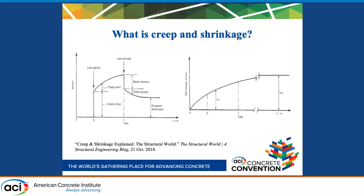First, if you need a refresher or are unfamiliar with creep or shrinkage, here is a little information you should know. Creep is defined as an increasing strain due to sustained stress. There are two types of creep: basic and drying. Basic creep occurs when there is no interaction with the surrounding environment, and drying creep is the additional creep due to the drying of the concrete.